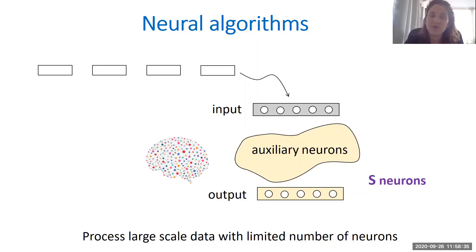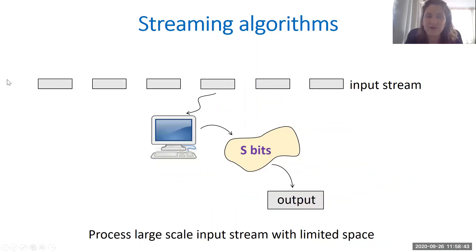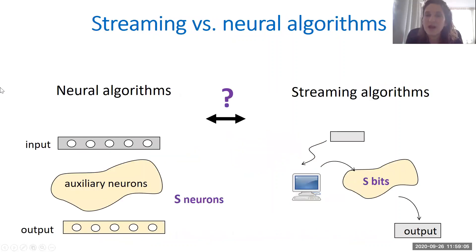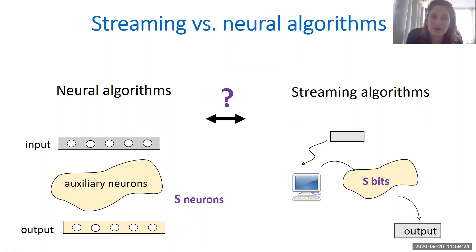In neural algorithms, we have a stream of inputs that we like to process, while we also have memory limitations. In computer science, these challenges are captured in the streaming setting, where in the classical streaming model we have a stream of inputs that we like to process, and for each input that we see we can process it using some algorithm and store a limited number of bits. While streaming algorithms have been studied over the years in computer science, we don't know a lot about data processing with neural algorithms. So in this work, we studied the connection between these two models, hoping to get some understanding of memory constraints in neural networks from the work done in the streaming setting.